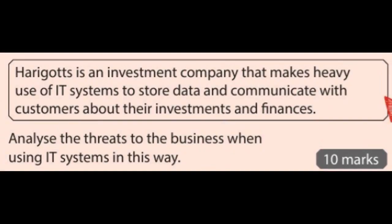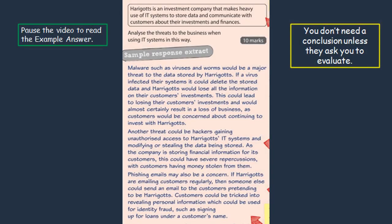On the screen here we've got an example of a question that might come up in your exam. This question is 10 marks and it's asking us to analyse, meaning we're going to have to give the pros and cons of the topic of the question. Now if the question says to analyse you don't need to give a conclusion, unless the question says to analyse and evaluate — that's when you would have to conclude your answer. The question on the screen is asking us to analyse the threats of the business using IT systems, and you need to talk about the different ways that the company could be affected by choosing to use IT systems.